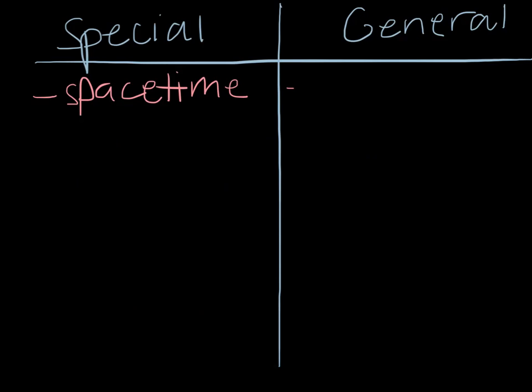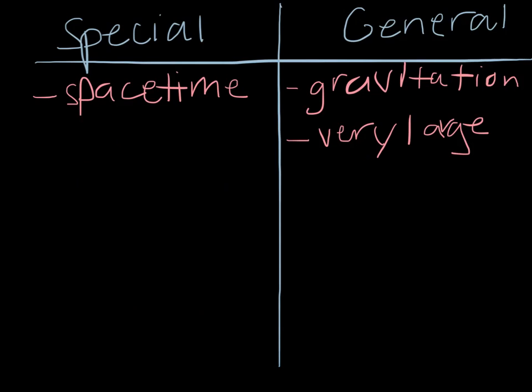General relativity, on the other hand, is a theory of gravitation. Consequently, general relativity deals with things on the astronomical scale, so very large things. This includes black holes, pulsars, and quasars.